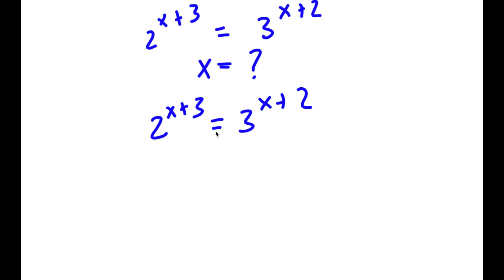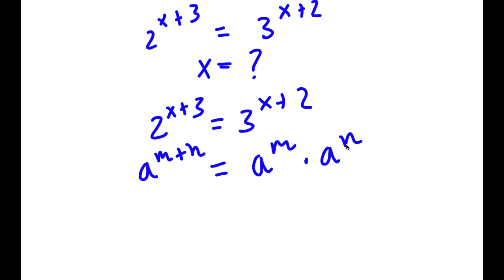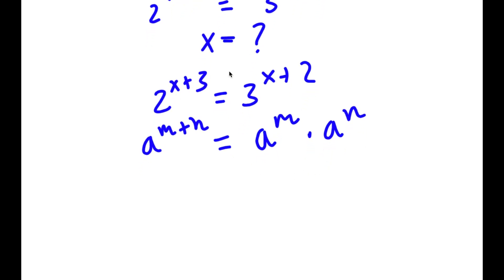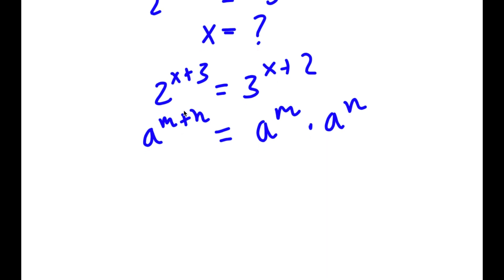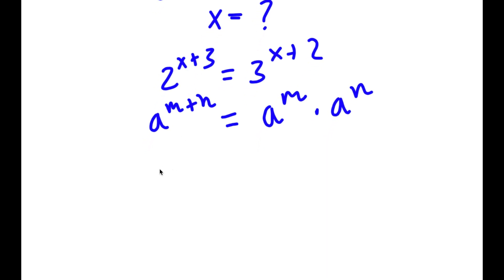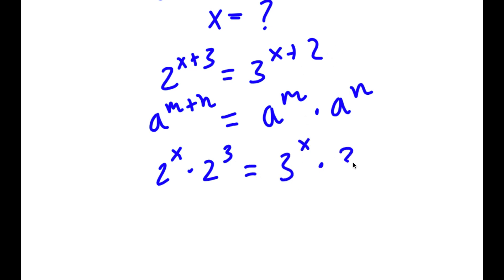If I have something in the form a to the power of m plus n, this is equal to a to the power of m times a to the power of n. So in this case, we have 2 to the power of x plus 3 and 3 to the power of x plus 2. 2 to the power of x plus 3 equals 2 to the power of x times 2 to the power of 3. And 3 to the power of x plus 2 equals 3 to the power of x times 3 squared.